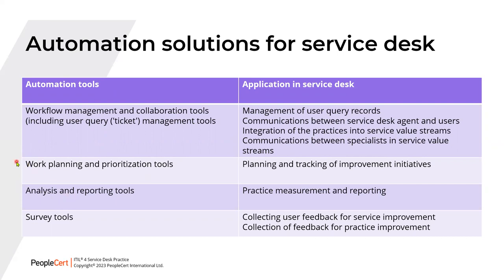Work planning and prioritization tools are for the planning purposes and tracking of improvement activities. Analysis and reporting is for the practice measurement and reporting — and on this one, we need to be cautious. The analysis and reporting is not used for tracking. The work planning and prioritization is used for planning, prioritization, as well as the tracking of the improvement initiatives. So just be cautious with that in the exam. The survey tools are used for collecting user feedback for service improvement and also feedback for practice improvement.